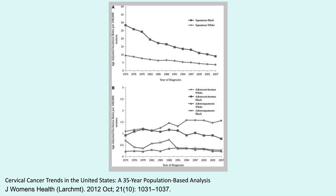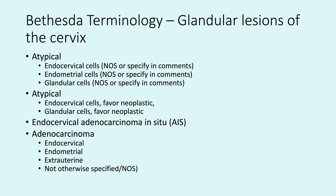Now we will move on to the categories for Bethesda terminology and glandular lesions of the cervix. AGUS, or atypical glandular cells of uncertain significance, is not used anymore — it was an older term, abandoned to avoid confusion with the similarly sounding squamous lesion. When possible, atypical glandular cells should be categorized as to the site of origin, as management is different. If not possible, the term atypical glandular cells, or AGC, can be used.